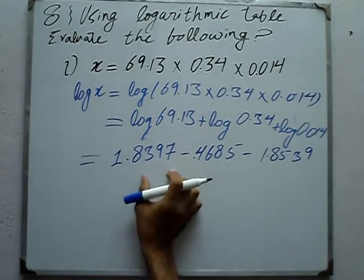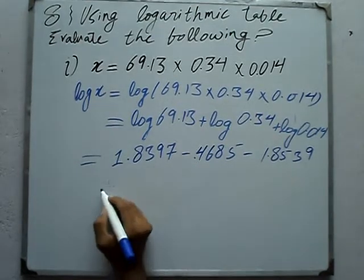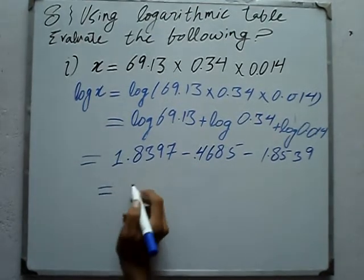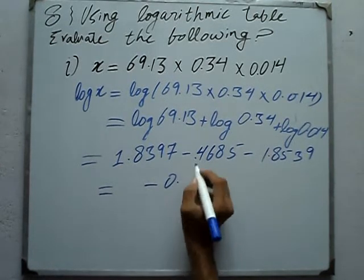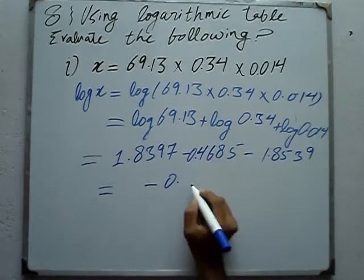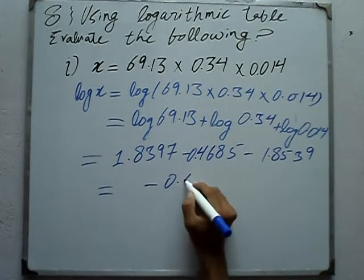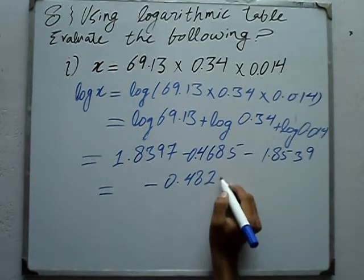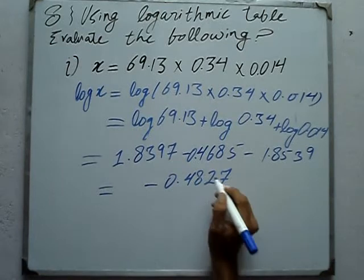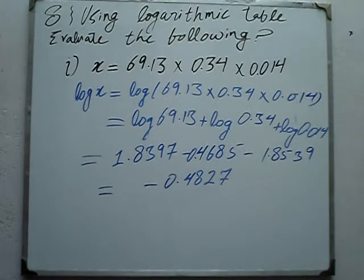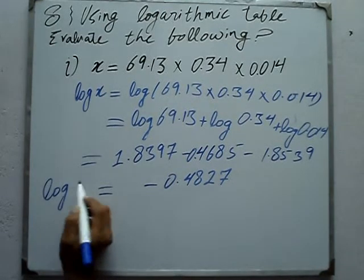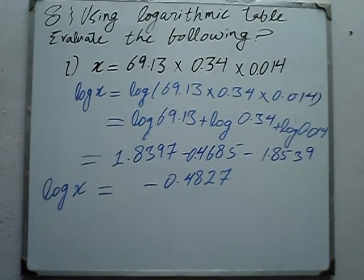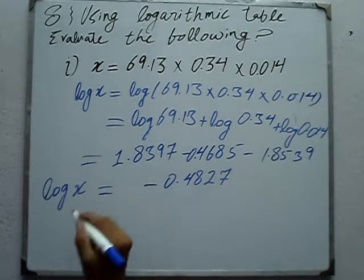When we sum these terms together, subtracting the negative terms, it will come out equal to minus 0.4827, which equals log of x. Since we have a single term, we proceed by taking anti-log.